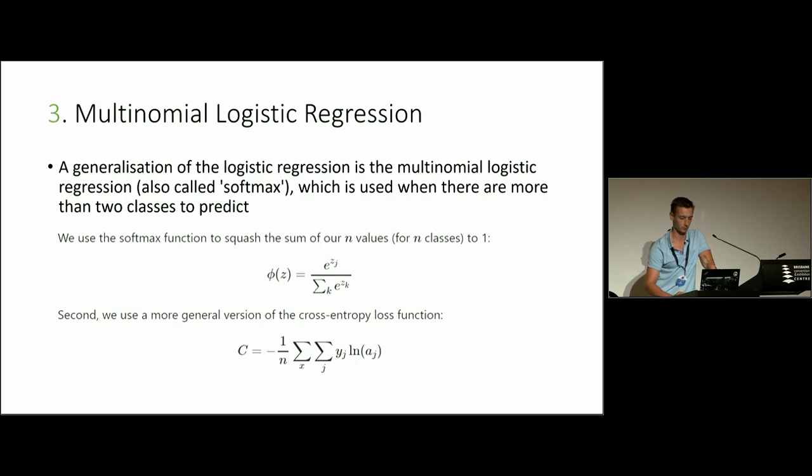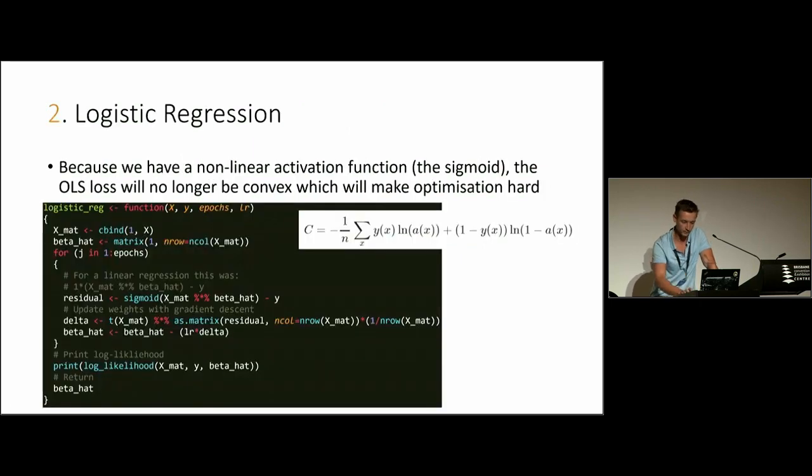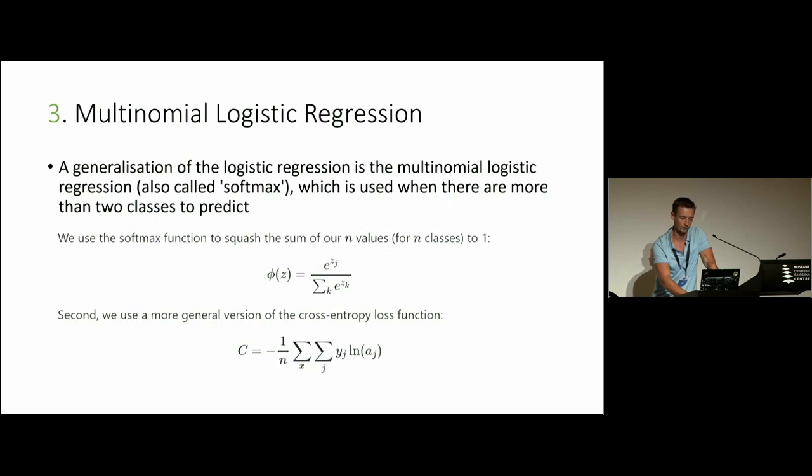Moving forward, now imagine we have more than two classes to predict. We want to use a multinomial logistic regression or a softmax function. Here we do two small differences. We use a softmax function to squash the sum of our values to one so we can interpret each output. We'll have the number of outputs equal to the number of classes we have as the probability of that, as a conditional probability given the data of that class. Now we use a more general version of the cross entropy loss function, which is pretty much the same as this one, except that we enforce that the sum of our activation functions is equal to y. And then j, which is the number of classes. If you plug that in, you'll get the same equation as previously.